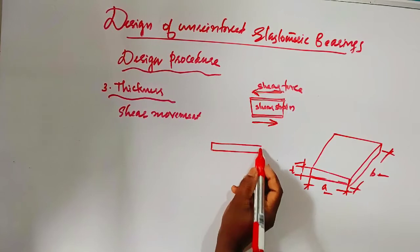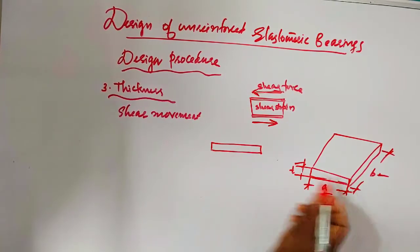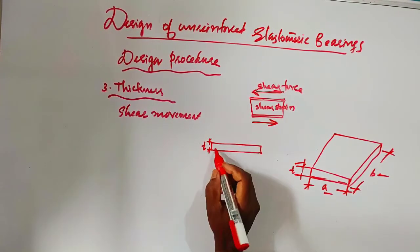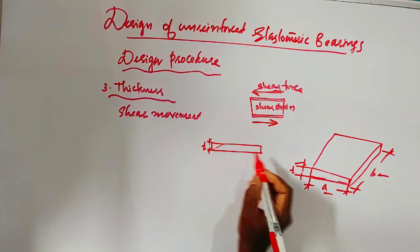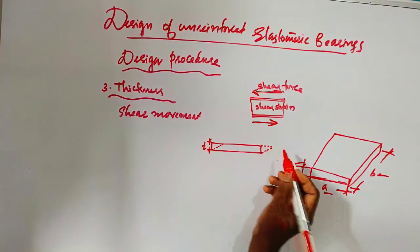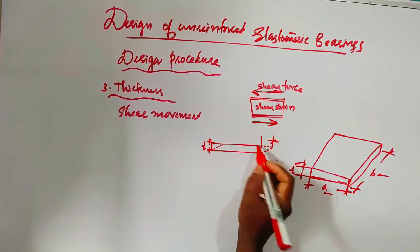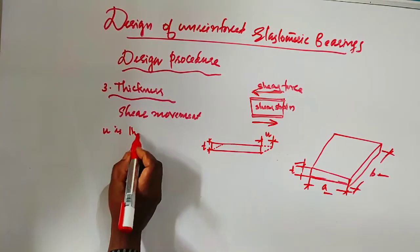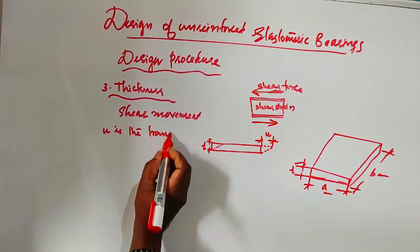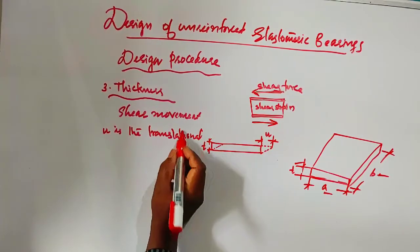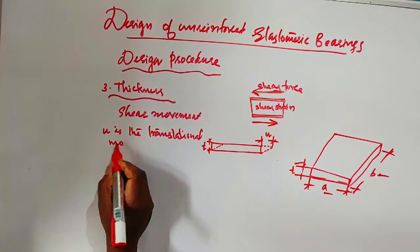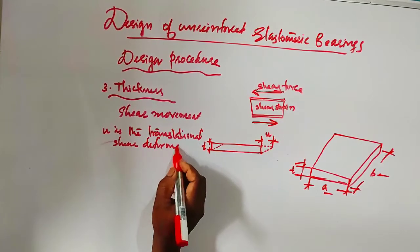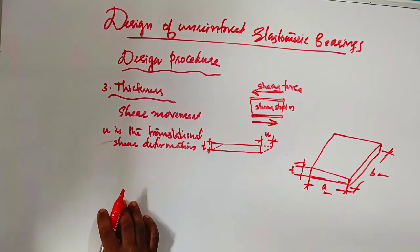I will draw another figure. This shows A and B, the plan dimensions, and T, the thickness of the elastomeric pad. The translational shear deformation developed is U. So U is the translational shear deformation, and U equals T times tan(φ).